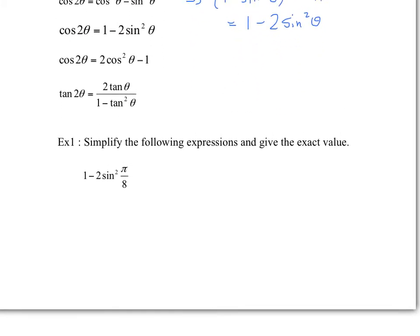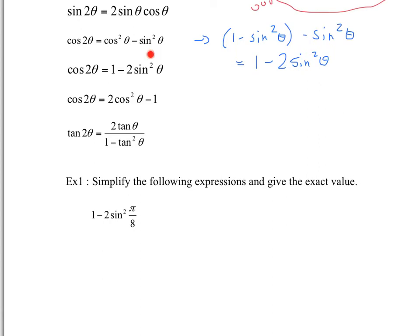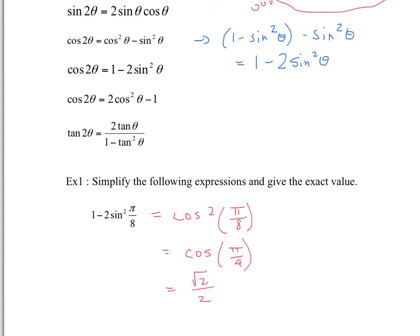For example, number 1: simplify the following expression and give its exact value. Notice that 1 minus 2 sine squared also appears in the double angle identity for cosine. So this is the same expression, and I've set theta equal to pi over 8. This formula is equivalent to cos of 2 times pi over 8. Multiplying, you get cos of pi over 4, and we know the value of cos of pi over 4 is square root of 2 over 2.